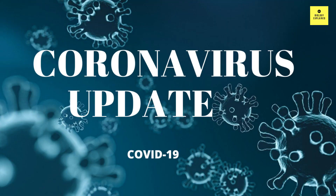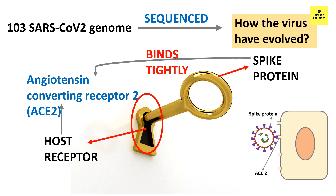In one of my previous videos, I talked about how SARS-CoV-2 spike proteins bind to the ACE2 receptor on the lung cells — I will provide the link in the description. Basically, the spike proteins act as a key and fit perfectly on the ACE2 receptor of the lung cell, which acts as a keyhole.